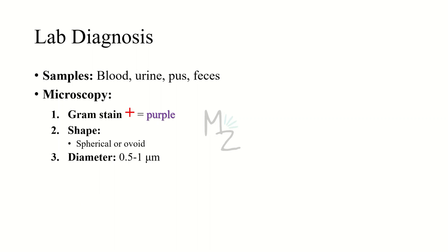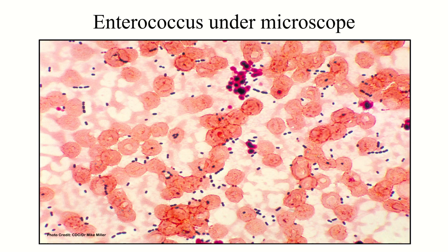Lab diagnosis requires samples of blood, urine, pus, and feces, since this bacterium inhabits the GI tract. On gram staining it appears purple — gram positive. Under microscopy the bacterium is spherical or ovoid in shape, is a diplococcus, and its diameter varies from 0.5 to 1 micrometer. As seen in the picture, it forms short chains, is diplococcus, and is purple in color.